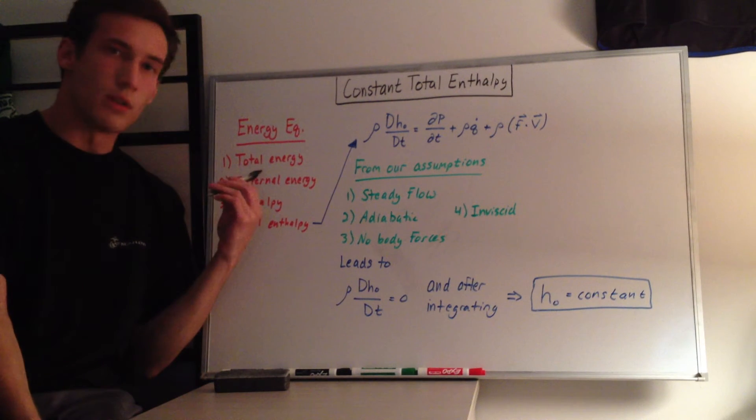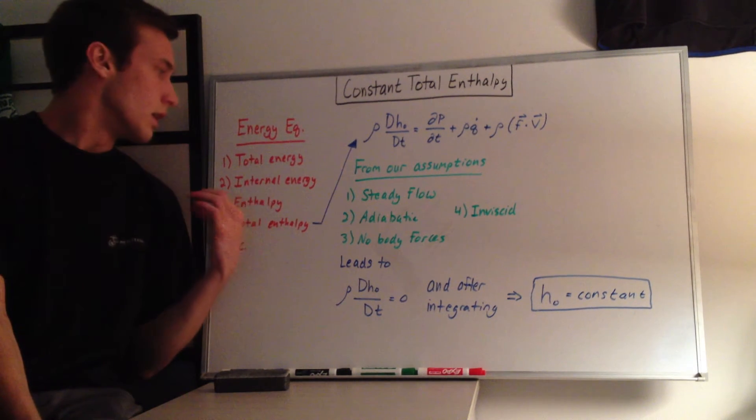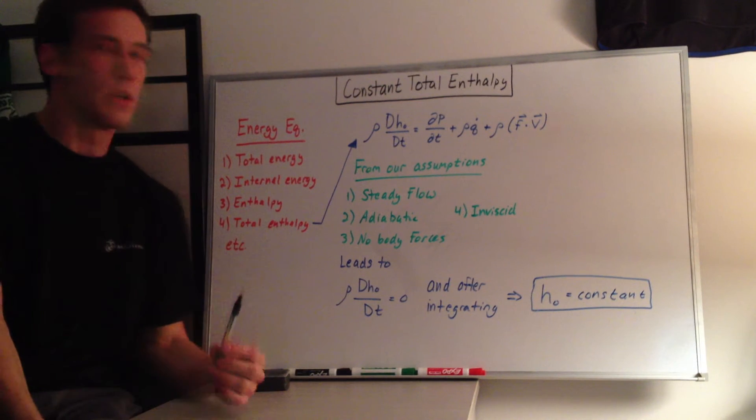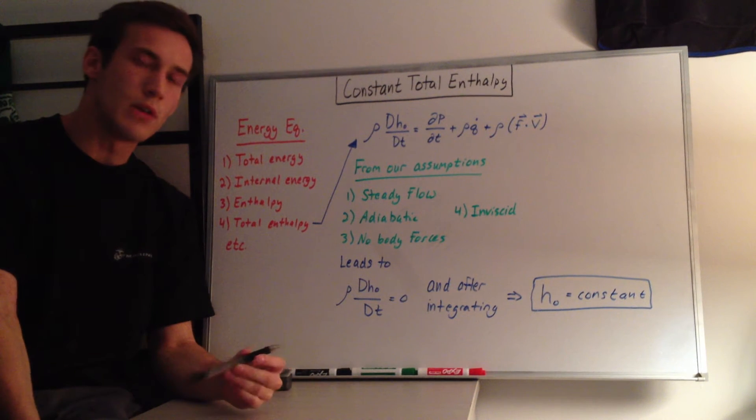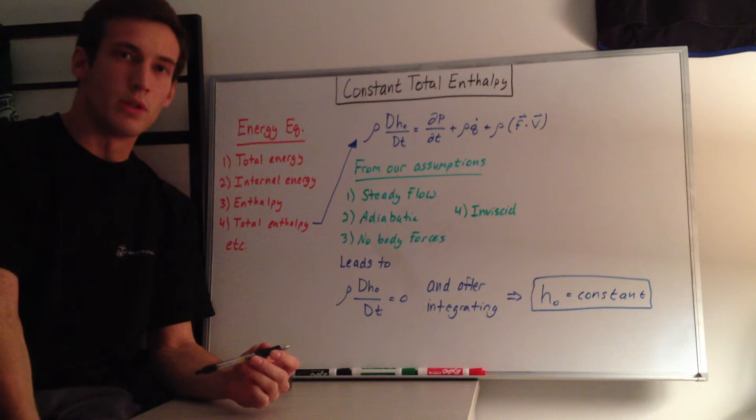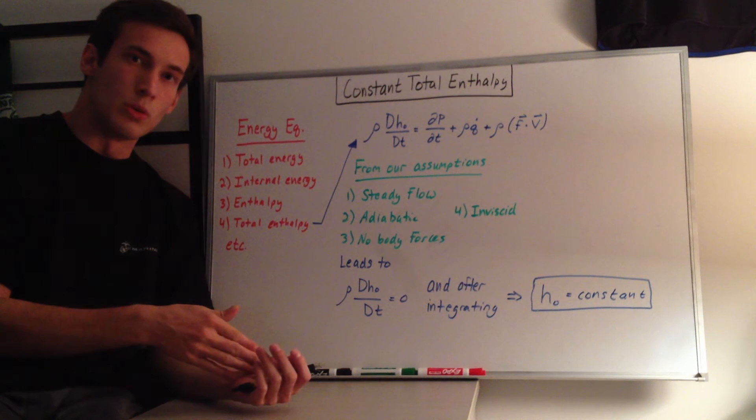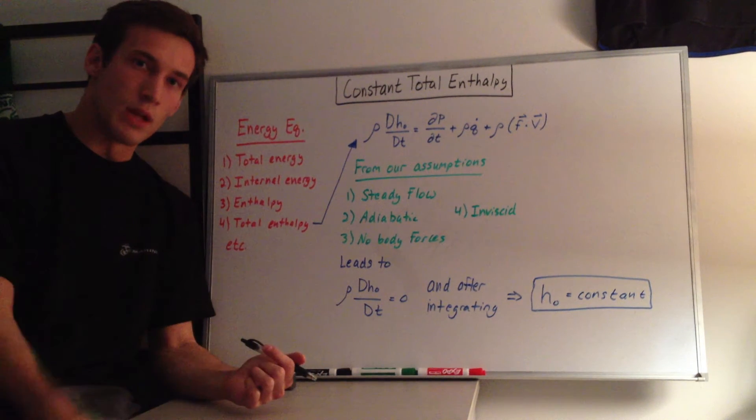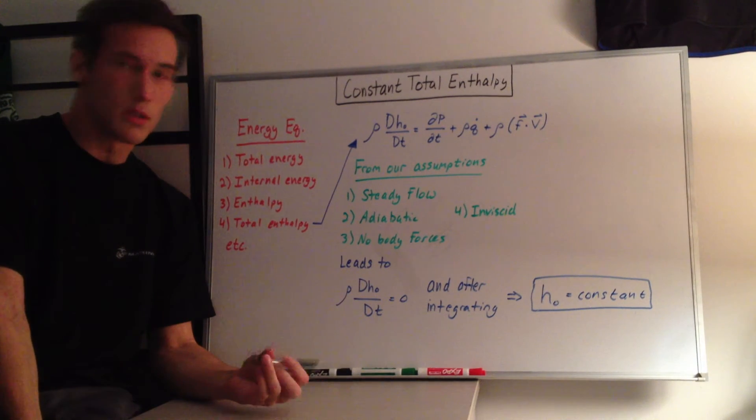we have the equation in terms of total energy, internal energy, enthalpy, and total enthalpy. You can change between internal energy to enthalpy by using the equation H equals E plus P over rho, which is the enthalpy is equal to the internal energy plus the pressure over the density.